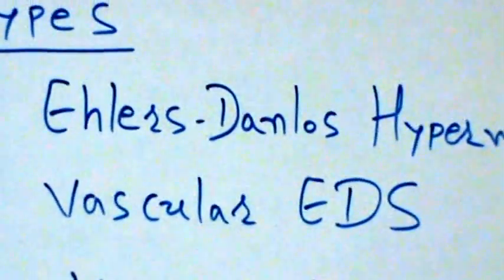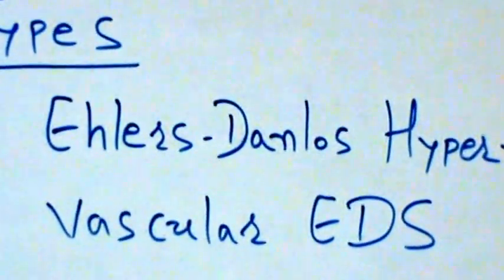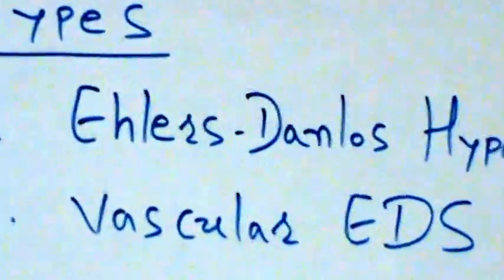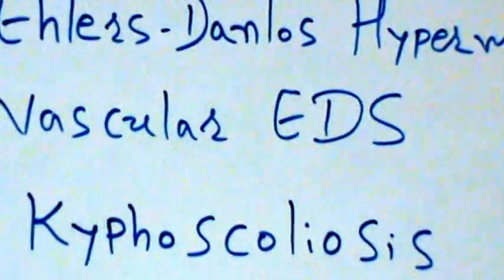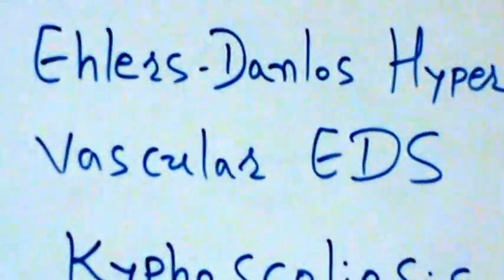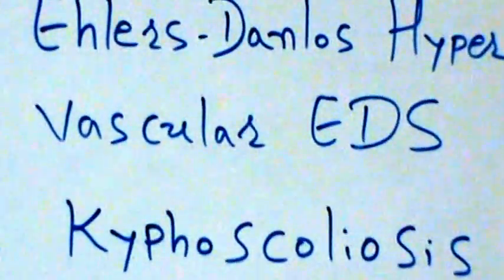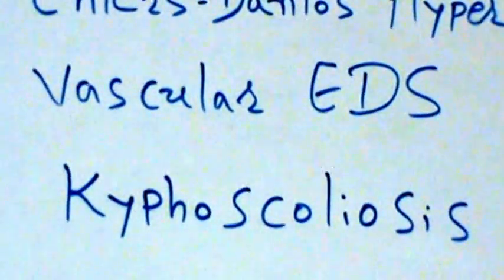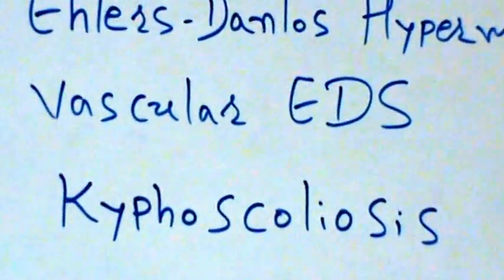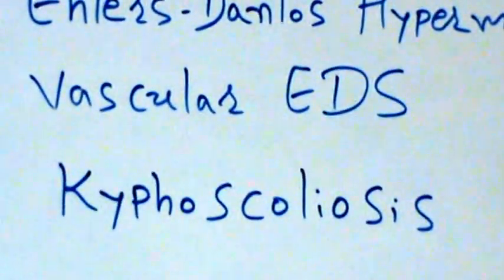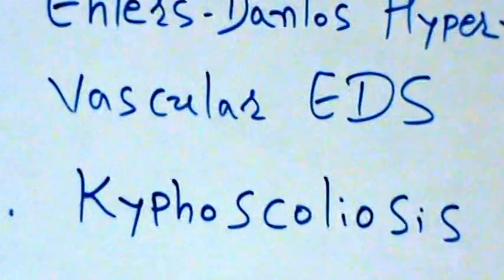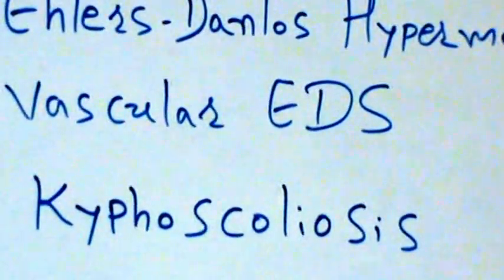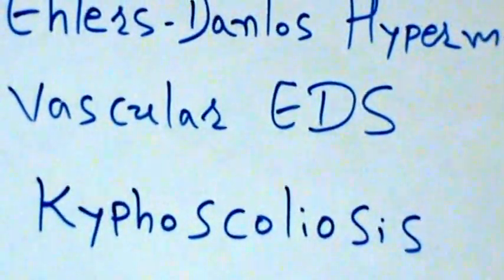Other forms of EDS can involve serious and potentially life-threatening complications. Vascular EDS can cause blood vessels to tear or rupture unpredictably, leading to internal bleeding, stroke, and shock. Vascular EDS is also associated with an increased risk of organ rupture, including tearing of the intestine and rupture of the uterus during pregnancy.